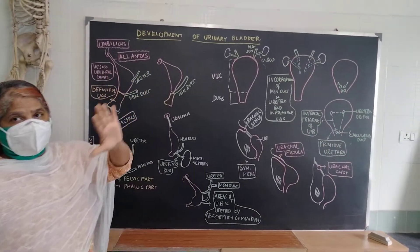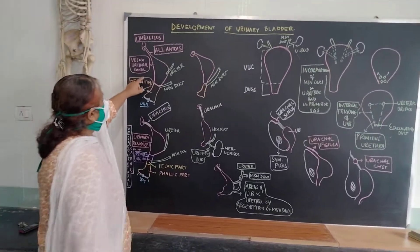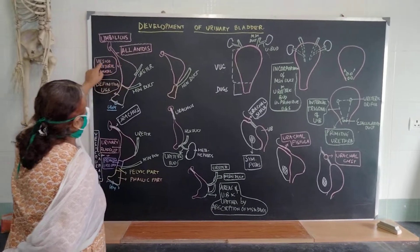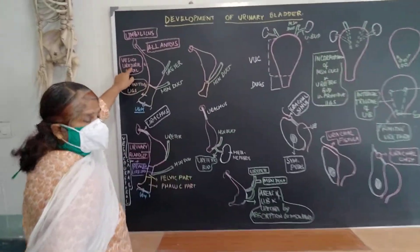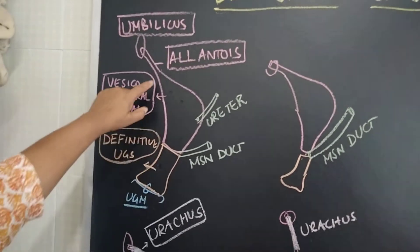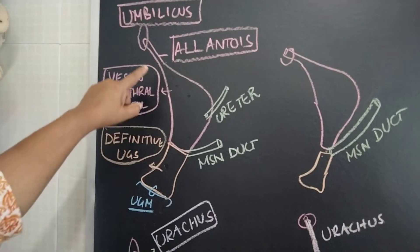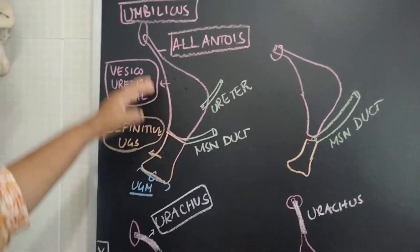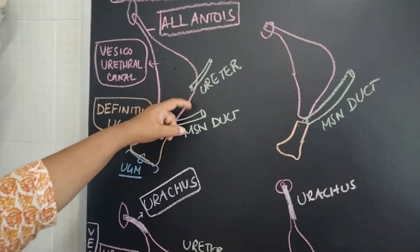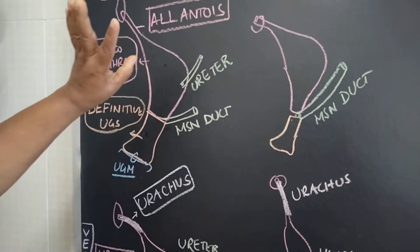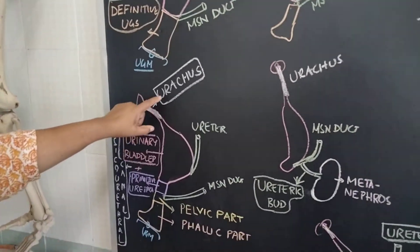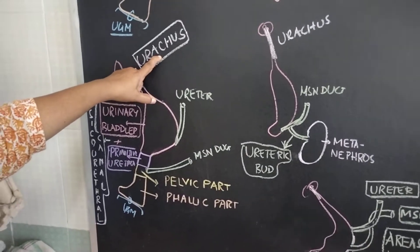Now, what is the development of the urinary bladder? This is the primitive urogenital sinus, which is divided into the upper part — the vesico-urethral canal — and the definitive urogenital sinus. The vesico-urethral part continues with a projection called the allantois towards the umbilicus. The mesonephric duct opens at the junction between the two, and from there the ureteric bud takes origin towards the metanephros. This allantois obliterates to become a fibrous structure called the urachus.